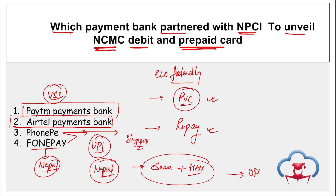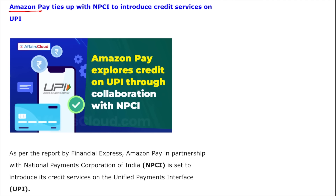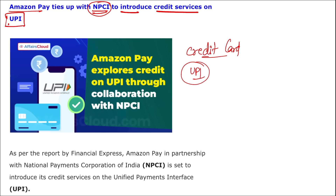PhonePe partnered with eSewa and Hotel Association of Nepal to announce the usage of UPI in Nepal. Airtel Payments Bank, in collaboration with NPCI, introduced the eco-friendly NCMC (National Common Mobility Card) debit and prepaid card, launched on 18th April 2024. Amazon Pay tied up with NPCI to introduce credit card services on UPI (Unified Payment Interface). This was reported by the Financial Express.